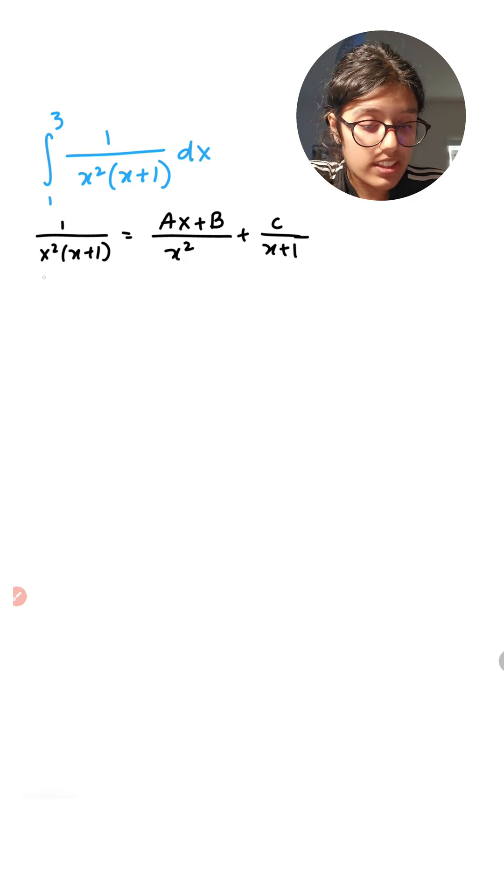So one of the factors was x squared, that is one of the denominators. The other factor was x plus 1, that is also one of the other denominators. And the reason I put Ax plus B for the first fraction is because I have x squared at the bottom.